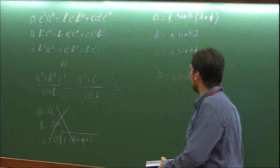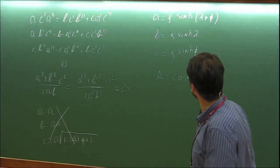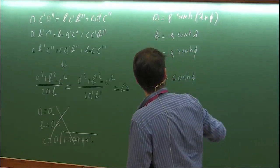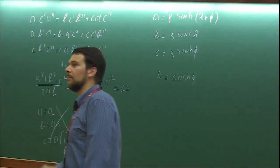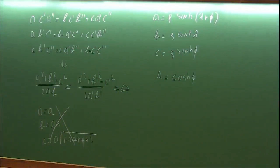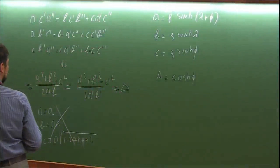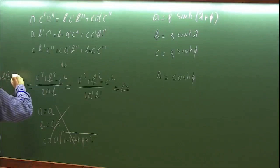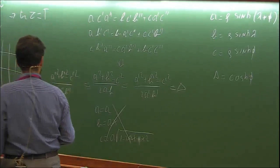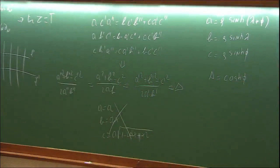If you choose two six-vertex models with parameters a, b, c that have the same value of φ but different values of λ, they are by construction commuting. The R matrix has the same shape and will also have to have the same invariant, so you can parametrize it through the same structure.